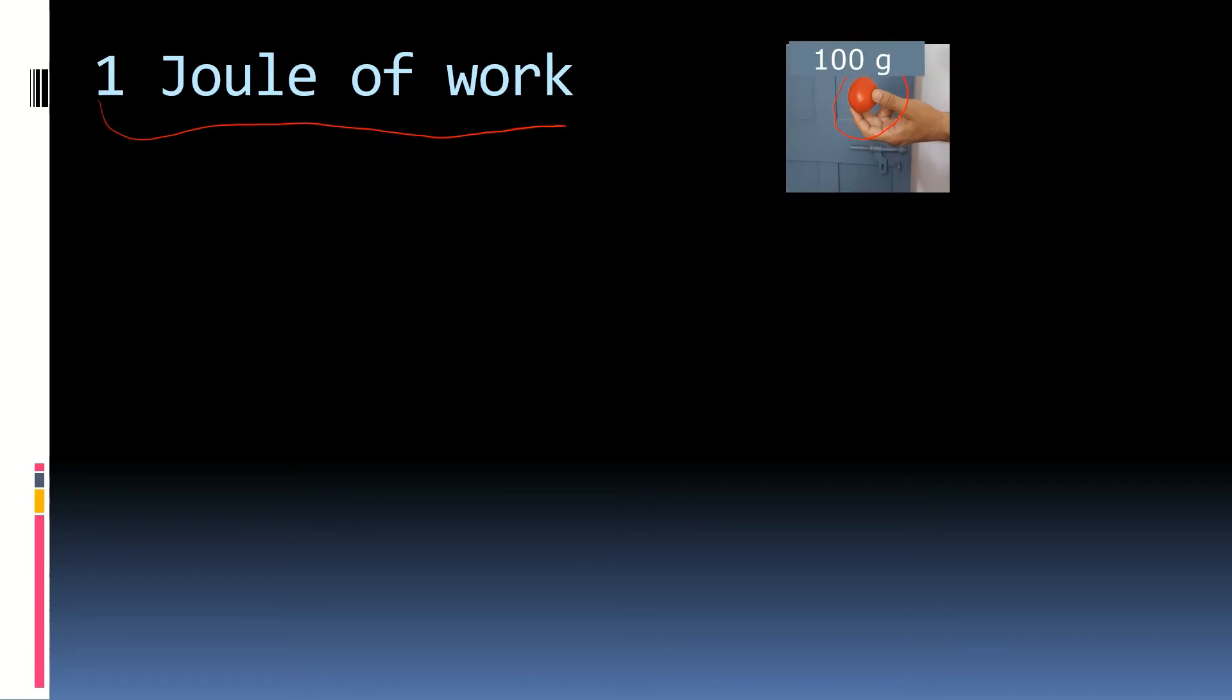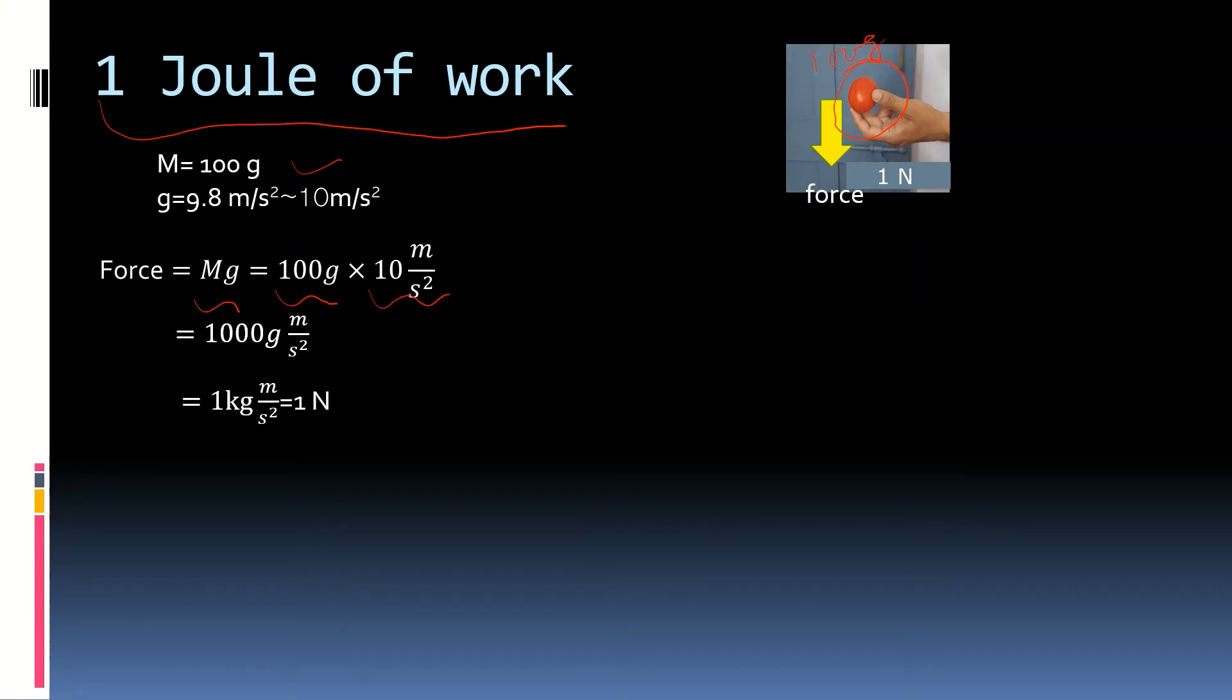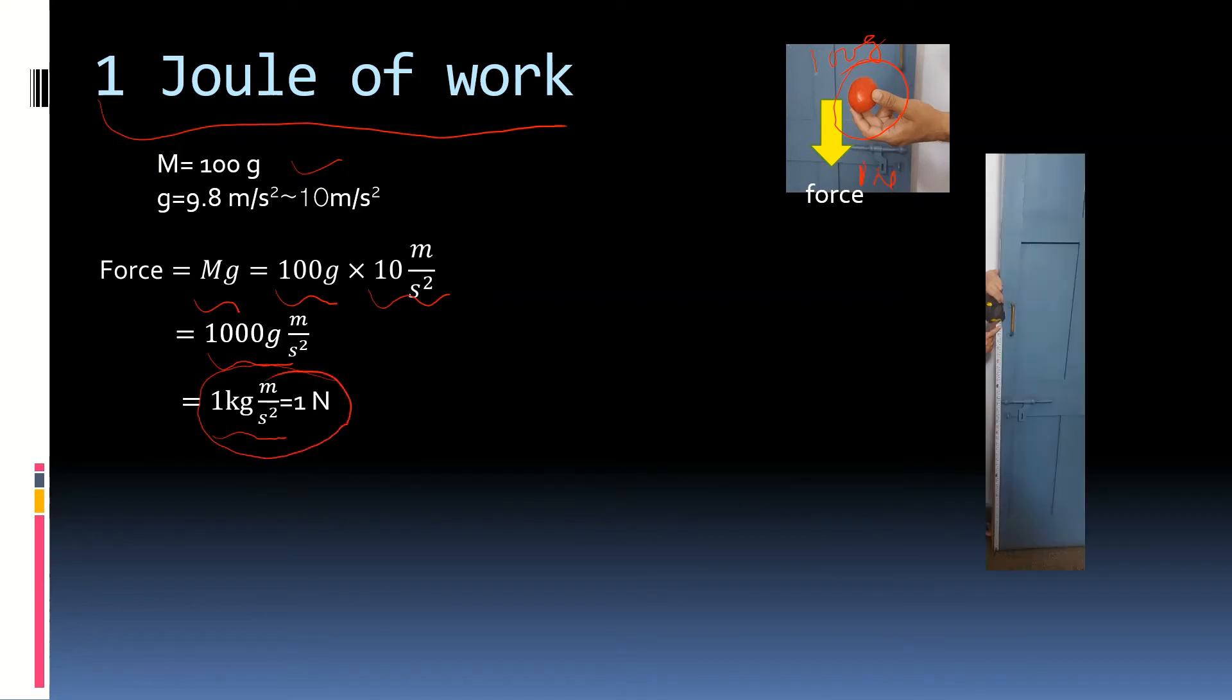Let's see what is 1 joule of work done or 1 joule of energy spent. And then we can have intuition of 4.2 joules. This is a tomato which is approximately 100 grams. This will cause a force of 1 Newton downwards because of its weight. Force is mass into acceleration due to gravity. 100 grams is the mass of tomato and g is assumed to be 10 meters per second square. So, 1000 grams meter per second square which is 1 kg meter per second square which is 1 Newton.